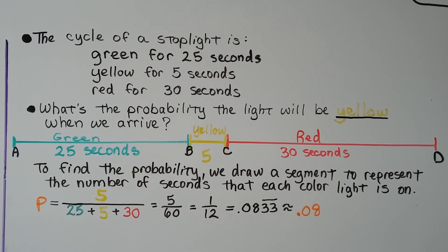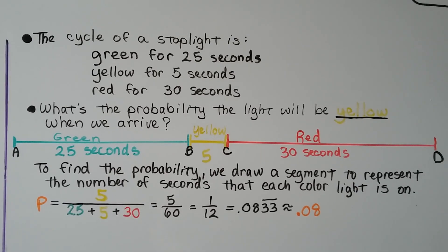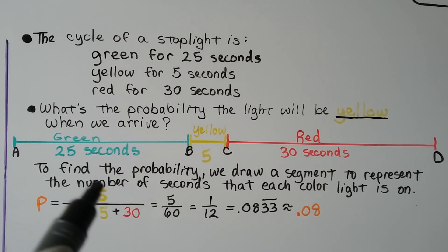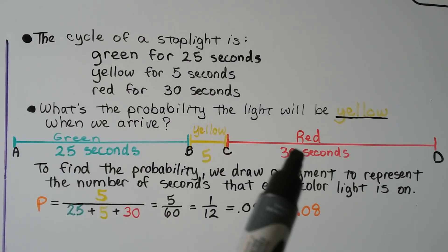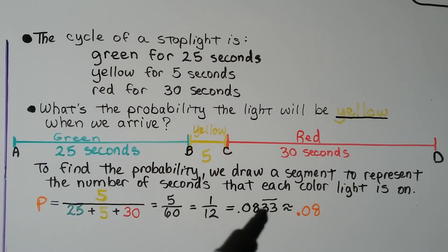The cycle of a stoplight is green for 25 seconds, yellow for 5 seconds, and red for 30 seconds. What's the probability the light will be yellow when we arrive? We draw a segment to represent the seconds each color is on. The probability of yellow is 5 over 25 + 5 + 30, which is 5 over 60 — that's 1 twelfth, approximately 0.08.